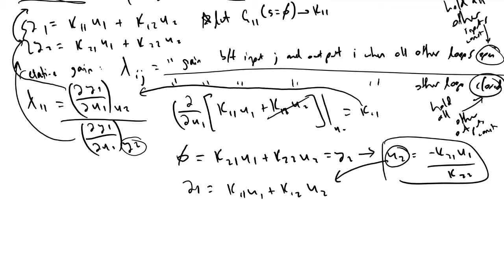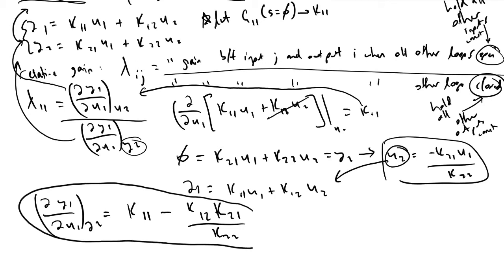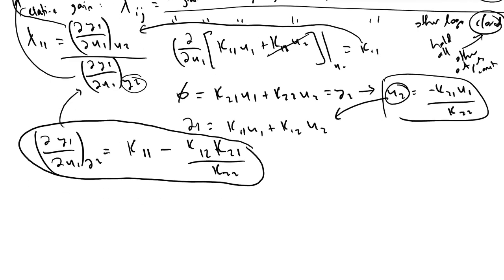I'll just get to what the final result is. We now realize that when we take dy1 du1 holding y2 constant, we will find that we reach the result k11 minus k12 times k21 divided by k22. The algebra is very straightforward, I'm just doing it for the sake of brevity.